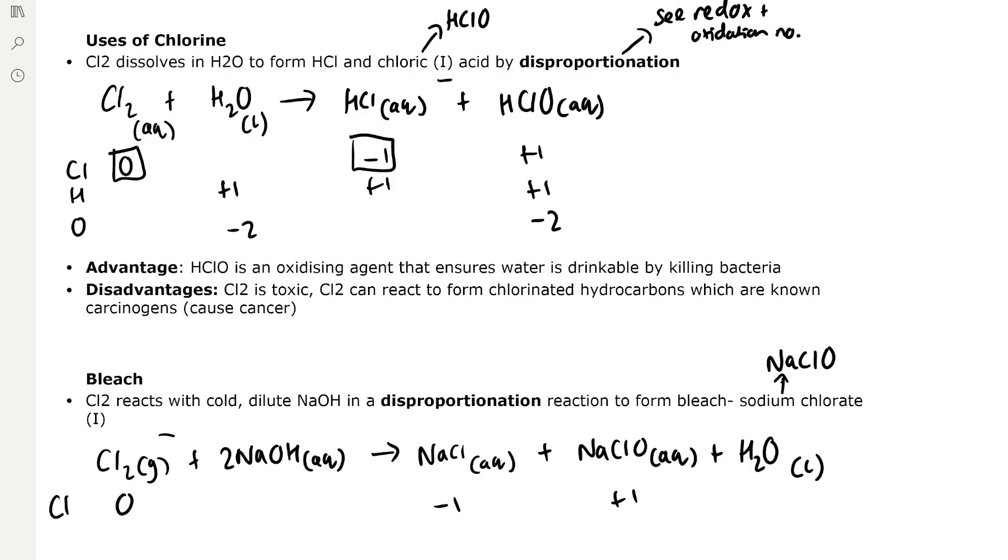Make sure to check out my redox and oxidation numbers video for more help on disproportionation. In this equation, chlorine goes from 0 to minus 1 and plus 1 in HClO. Disproportionation is when chlorine is both oxidized and reduced—it's reduced to minus 1 in HCl and oxidized to plus 1 in HClO.